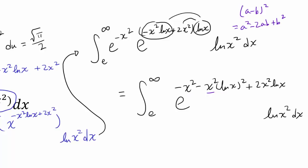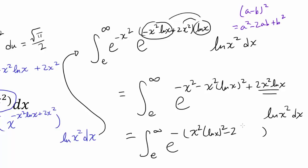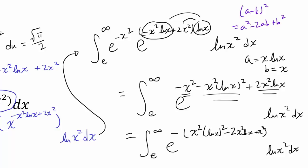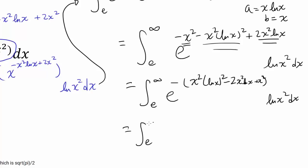Let me clean this up. We have the integral from e to infinity of e to the negative times the quantity: x squared natural log of x squared, minus 2x squared natural log of x, plus x squared, dx. Factoring out the negative from all terms, we can identify a equals x times natural log of x and b equals x. So this is precisely a squared minus 2ab plus b squared, which factors as negative times x natural log x minus x, all squared.